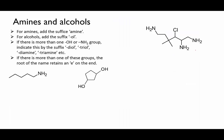Let's try these examples. First we've got a simple amine. First identify the main chain. There are five carbons, so it's based on pentane. But the end carbon has an amine group attached, so the name is changed from pentane to pentanamine.